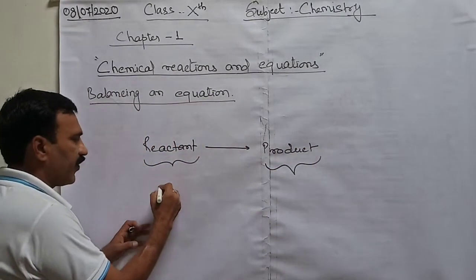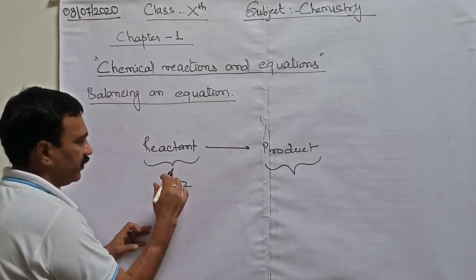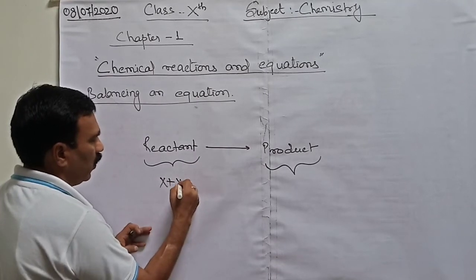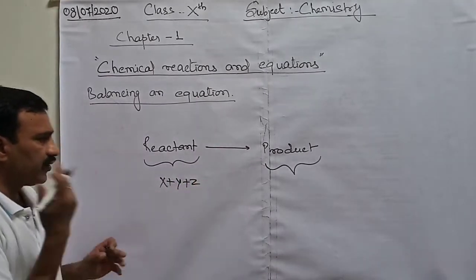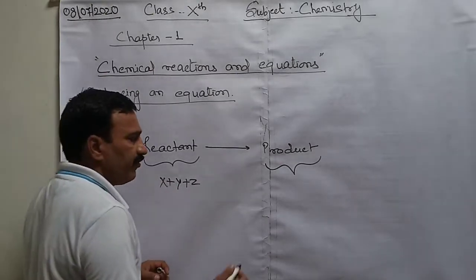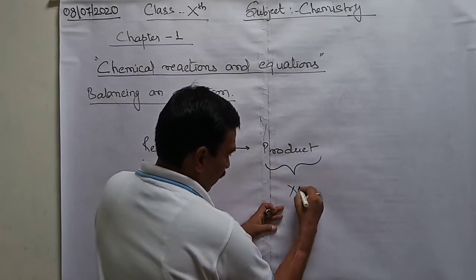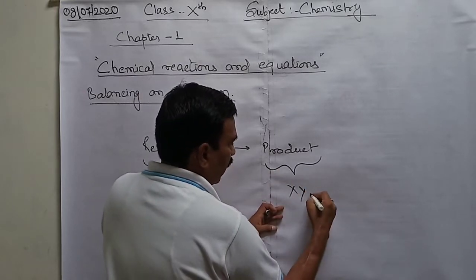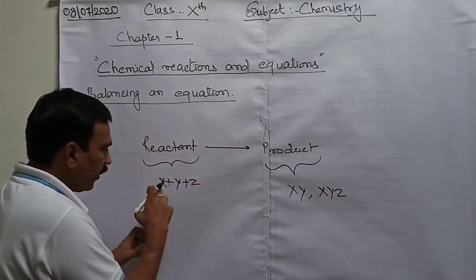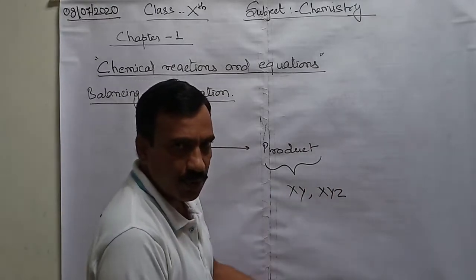That means whatever the reactants, let it be X, Y, Z. Suppose we are going with a reaction in which we are combining X, Y and Z. All these three components should also be visible on the product side. These three must be visible on both sides.